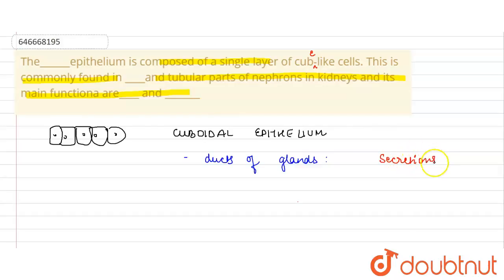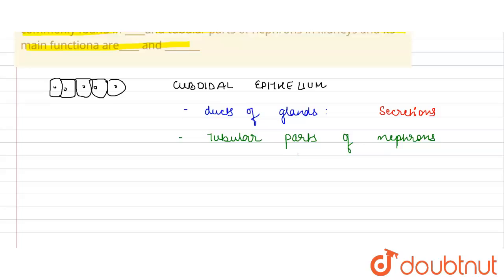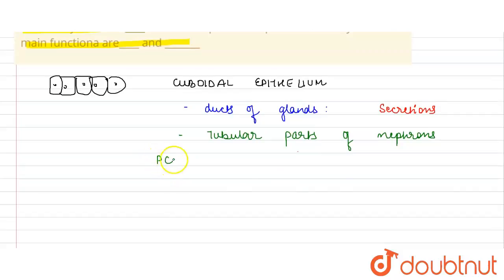Second, they are found, as already mentioned in the question, in the tubular parts of the nephron. What are the tubular parts of the nephron? The tubular parts of the nephrons are two. That is the PCT and DCT.